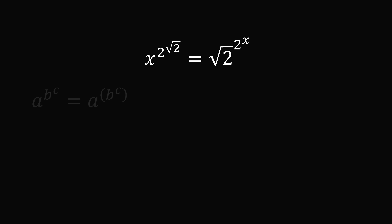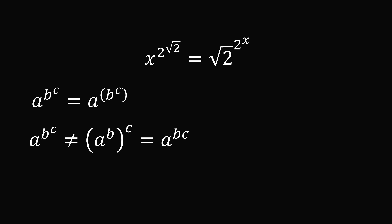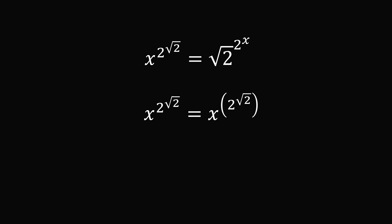Before I get to the solution, it's a good time to clear up a common misconception. When you have a to the power of b to the power of c without parentheses, you're supposed to interpret this as right associative, or evaluate it from top down. So this is a to the power of the quantity b to the power of c. In general, this is not going to be the same if you take a to the power of b first, then raise it to the power of c — that's equal to a to the power of bc. So in this problem, x to the power of 2 to the power of square root of 2 should equal x to the power of the quantity 2 raised to the power of square root of 2.